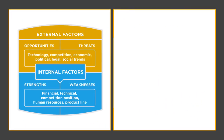A SWOT analysis — which represents Strength, Weakness, Opportunities, and Threats — is a framework used to evaluate a company's competitive position and to develop strategic plans. A SWOT analysis assesses internal and external factors, as well as current and future potentials. Strengths describe what an organization excels at and what separates it from the competition — a strong brand, perhaps a loyal customer base, a strong balance sheet, or some sort of unique technology.